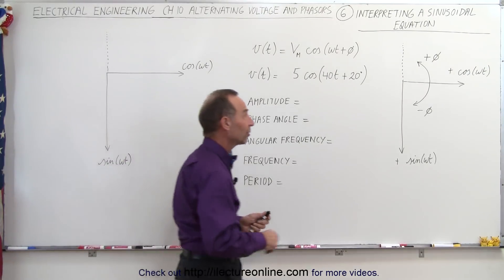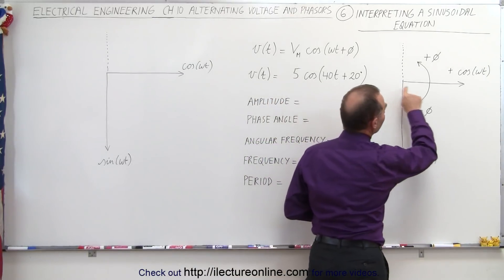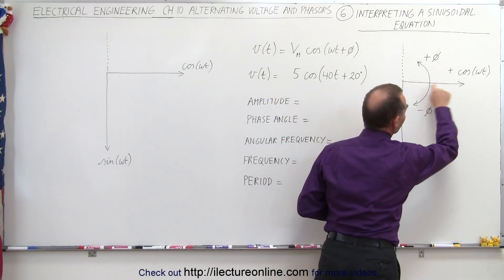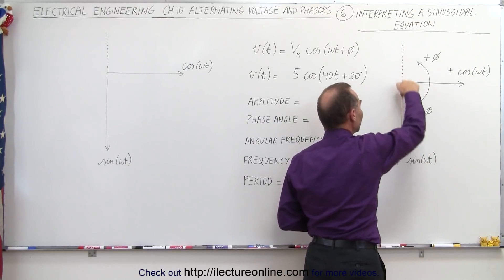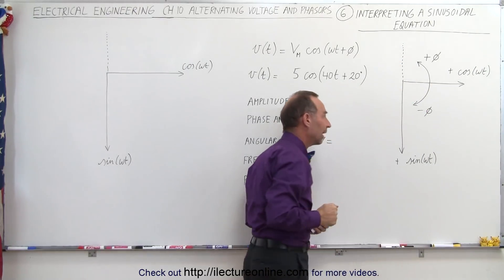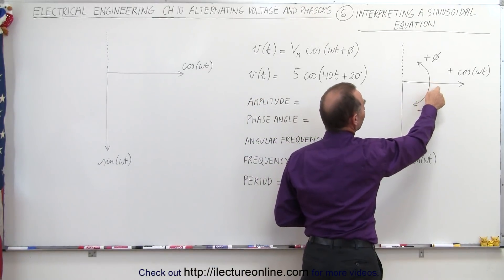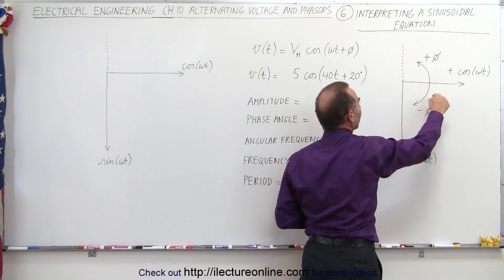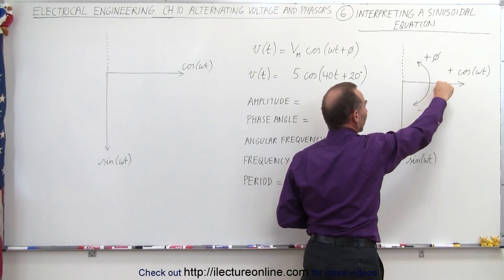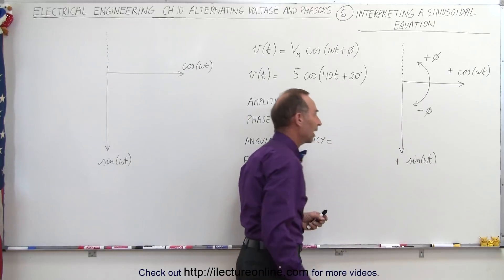We realized from the last video that the positive cosine is to the right on the positive horizontal axis and the positive sine function is in a downward direction on the vertical axis. A positive phase angle is from the horizontal axis to the vertical axis and the negative phase angle is from the horizontal axis to the negative vertical axis.